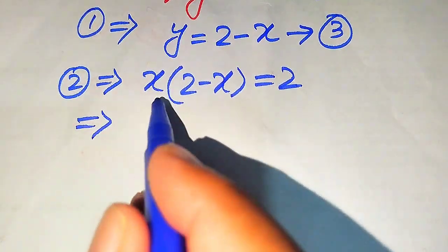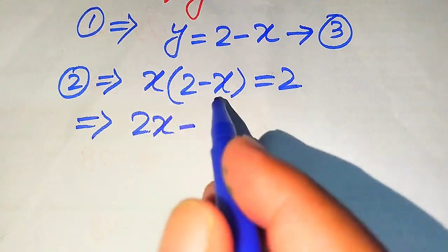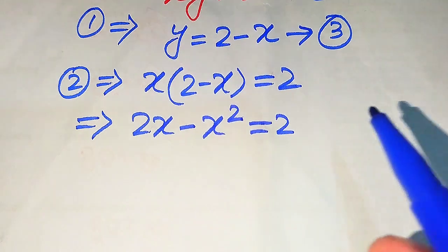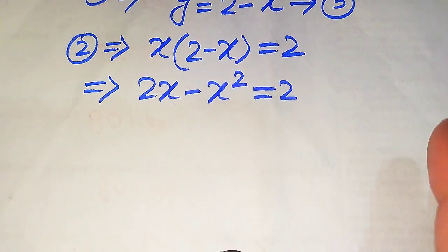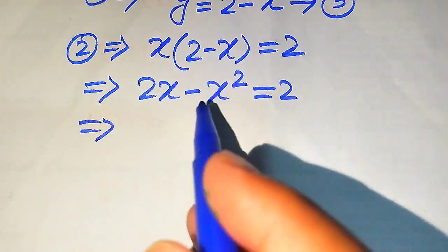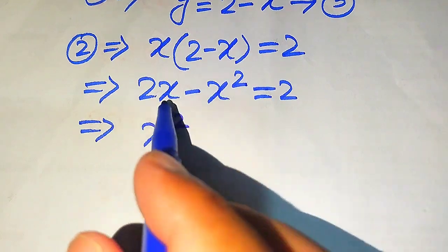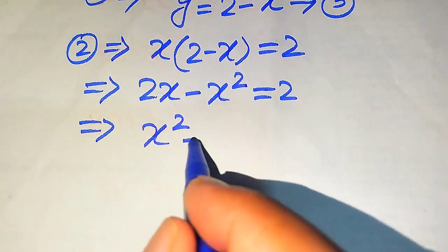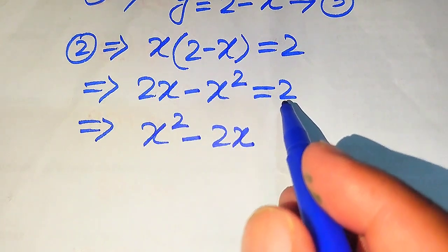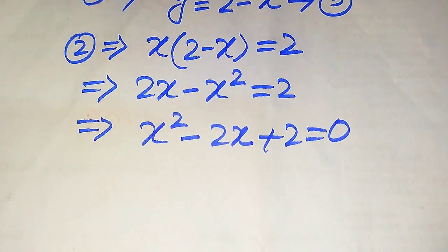In the next step we multiply x on both values, and it will be written as 2x minus x times x, which becomes x squared, equals 2. Then we move these terms to the right hand side: minus x squared becomes plus x squared, plus 2x becomes minus 2x, and 2 stays on the right hand side, so the whole equation equals 0.